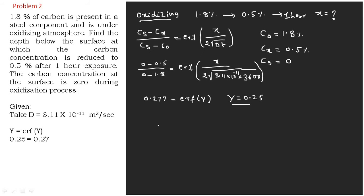It means 0.25 is equivalent to X/(2√(3.11 × 10^-11 × 3600)). Here you can see that the value of X can be calculated with the help of a calculator.